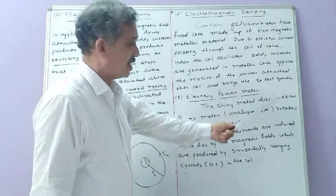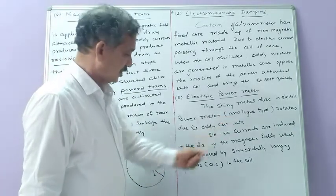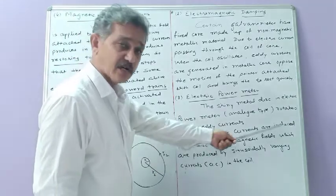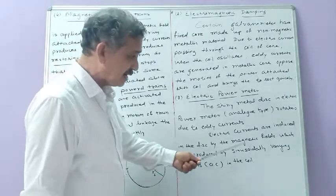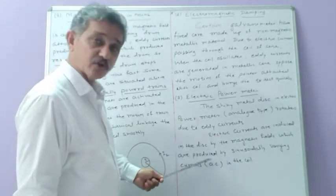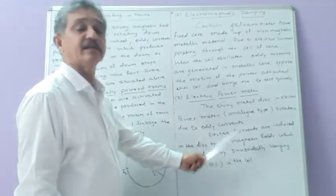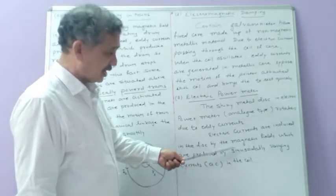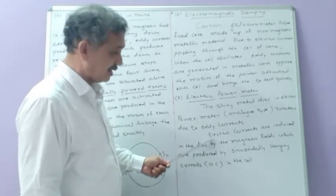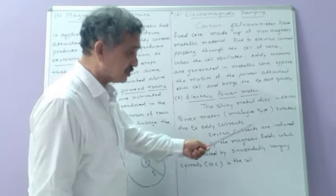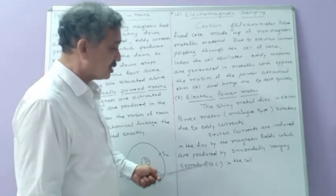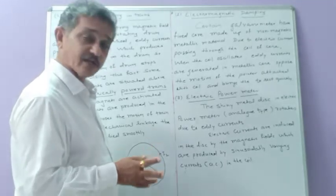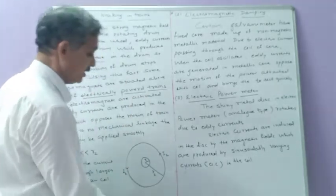The metallic disc in the electric power meter rotates due to eddy currents. Electric currents are induced in the disc by the magnetic fields produced by sinusoidally varying AC currents in the coil. This AC current produces a magnetic field, and electric currents are induced in the metallic disc, causing it to rotate continuously due to the eddy currents produced.